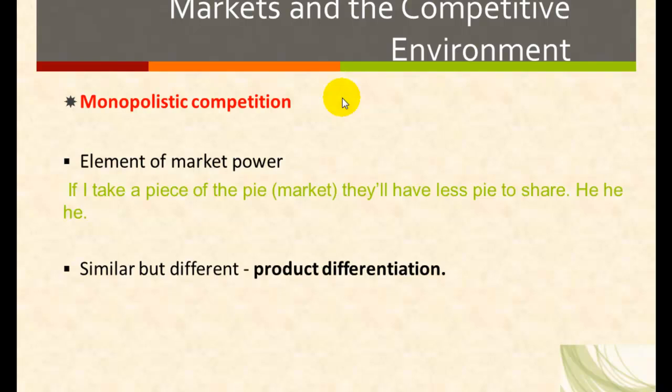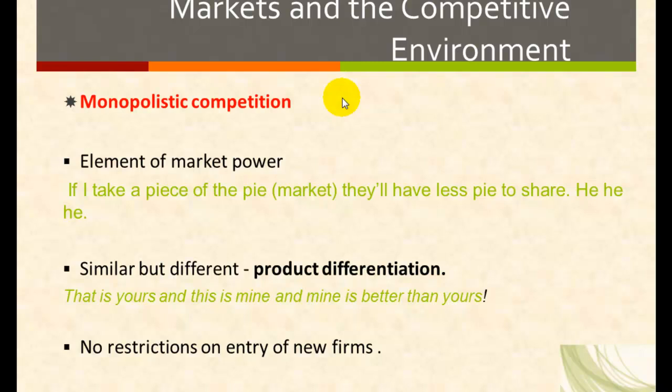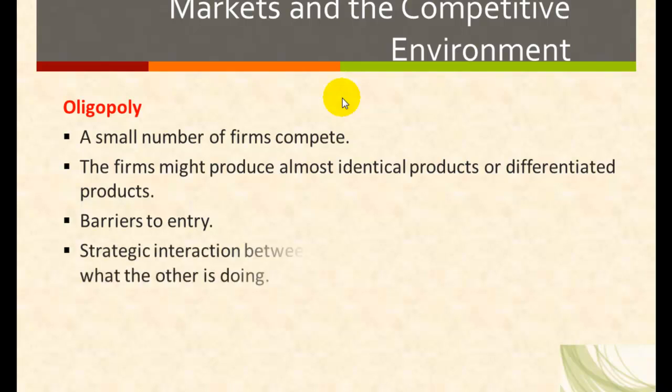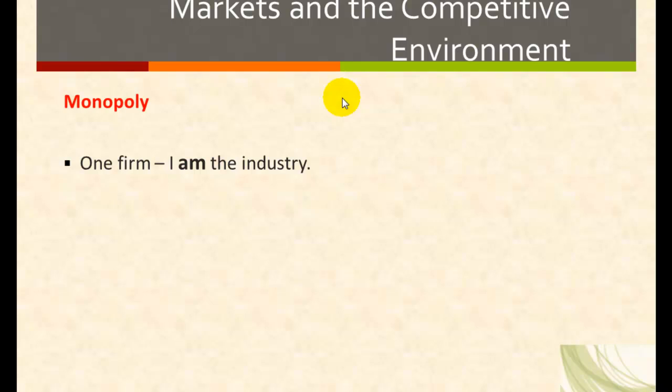For monopolistic competition, there is an element of market power. There are similar but different products, and there are no restrictions on entry of new firms. For the oligopolistic structure, there are a small number of firms that compete with each other. The firms might or might not produce identical products.